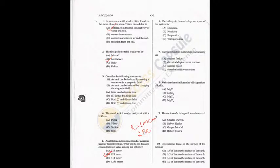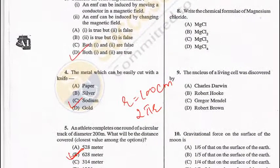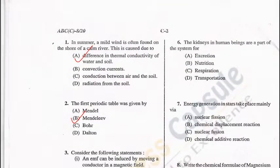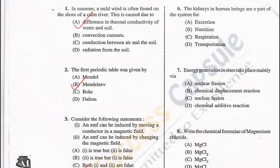For question 4, the answer is C, and for question 3 the answer is D. Question 6: The kidneys in human beings are part of the excretory system — A is the correct answer. Question 7: Energy generation in stars takes place mainly via nuclear fusion — C is the correct answer. Stars produce energy via fusion.